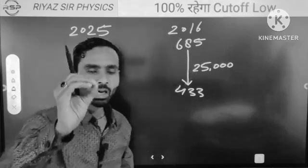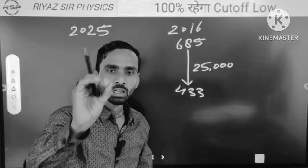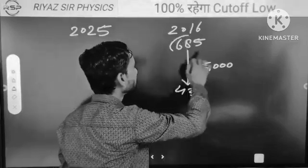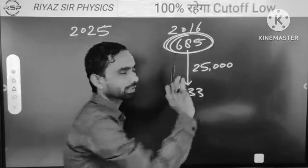Now let me tell you for information that here in NEET 2016, the marks of Allen and Akash's topper were right here at 685. It was at 685. Clear?